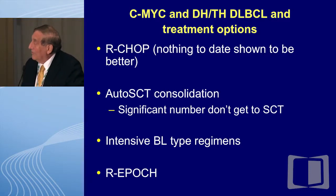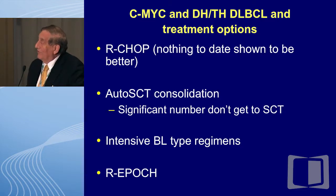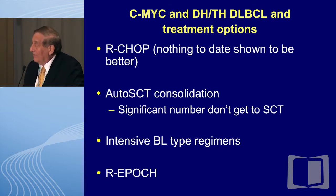What are some of the treatment options for MYC positive diffuse large cell lymphomas? To date, nothing has been shown in a randomized study to be better than R-CHOP, and there is some benefit from R-CHOP, although not nearly as good as for non-MYC patients. Some have thought about using autologous stem cell transplants, but the prognosis is so very poor that not all patients can get to an autologous stem cell. Some have thought about using intensive Burkitt's-like regimens, and R-EPOCH is being tested as well.